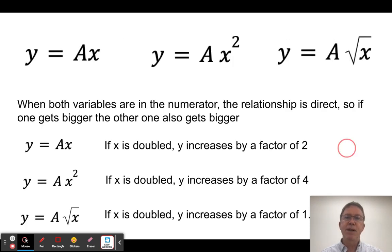Here's one way of thinking about it. If both variables are in the numerator, in other words, there's not one in the denominator, then we have what's called a direct relationship. If one gets bigger, the other one gets bigger. In all of these cases, if x gets bigger, y gets bigger. And if y gets bigger, x gets bigger. They're both in the numerator, so that's going to be true.